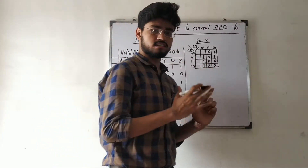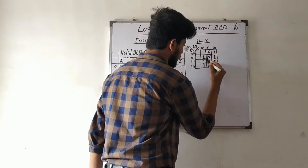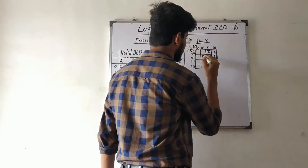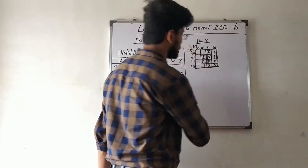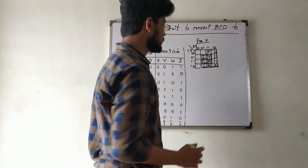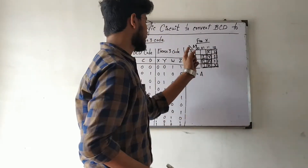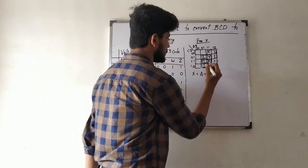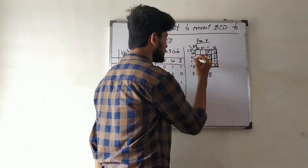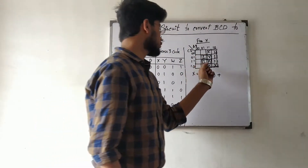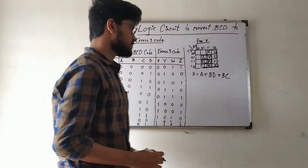Now we find groups in the K-map. These can be grouped as a group of eight, a group of four, and another group. From these groups, we derive the expression for X. The first group (where A=1) gives A. The second group gives BD. The third group gives BC. So the expression for X is: X = A + BD + BC.